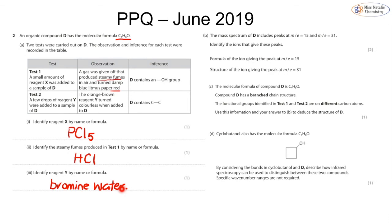The mass spectrum of D includes peaks at m/z 15 and 31. The peak at 15 is CH₃⁺ (methyl cation). The peak at 31 is CH₂OH⁺. Compound D has molecular formula C₄H₈O, a branched chain structure, and functional groups on two different carbon atoms. It must have an alcohol group, a branch, and a double bond. With four carbons and one CH₃ branch, we have a three-carbon chain with a double bond and an OH group on different carbons.